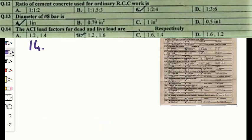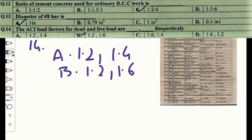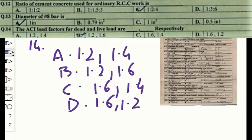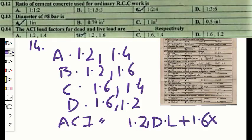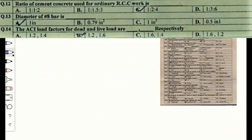Question number fourteen: the ACI load factors for dead load and live load are — option A 1.2 and 1.4, option B 1.2 and 1.6, option C 1.6 and 1.4, or option D 1.6 and 1.2. According to ACI 318, the factored load is 1.2 times the dead load plus 1.6 times the live load. The correct option is B — 1.2 and 1.6.